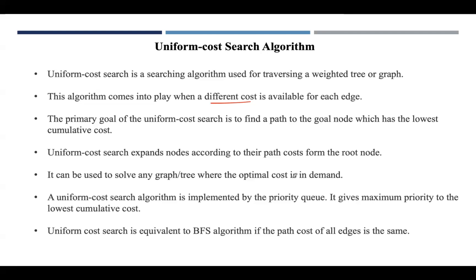Node expansion takes place based on the path cost from the root node. If there are three paths from the root node, the node with the lowest path cost is considered for expansion. It is implemented with a priority queue, since the node with the lowest cost gets maximum priority. If the path cost of all edges is the same, Uniform Cost Search is equivalent to BFS.